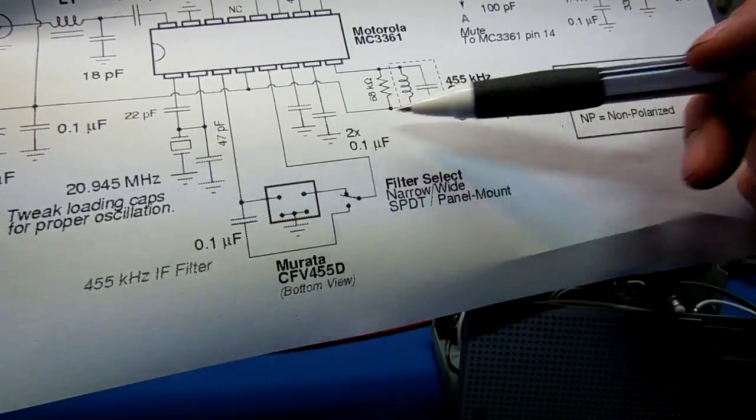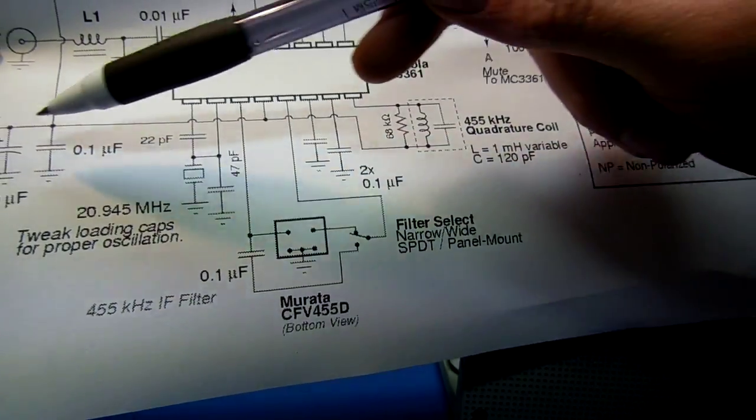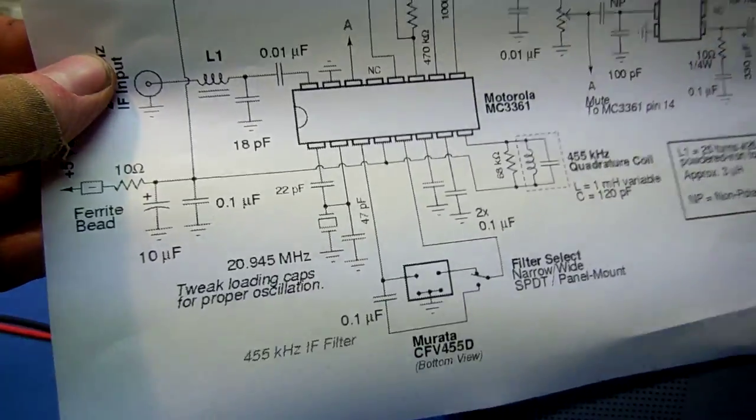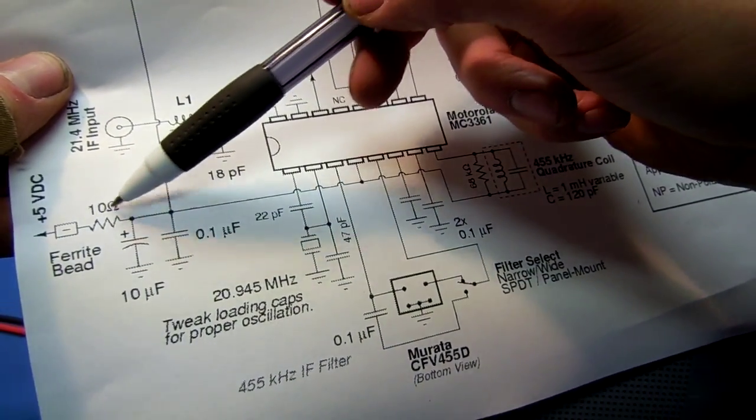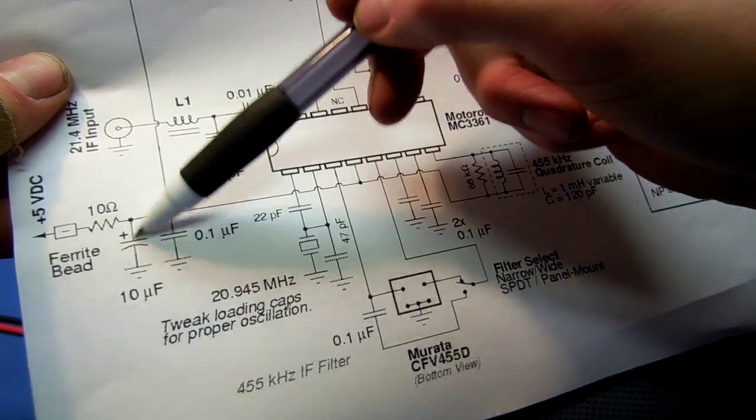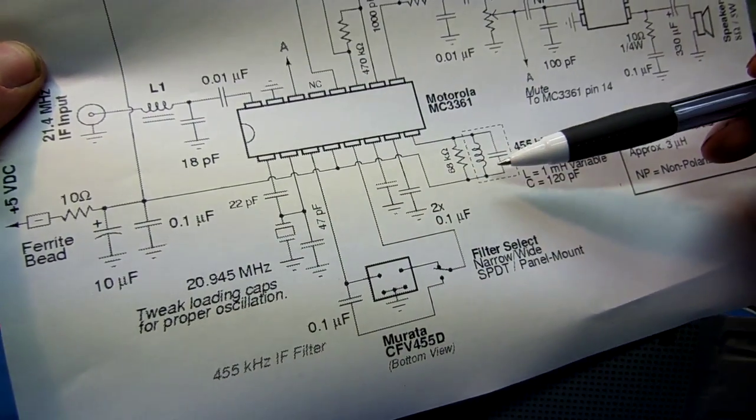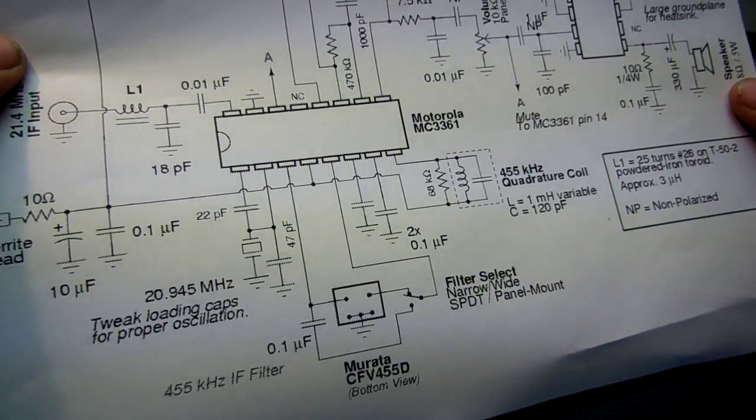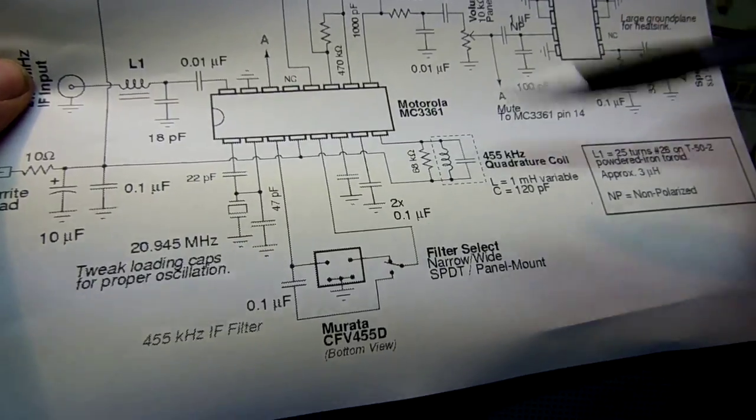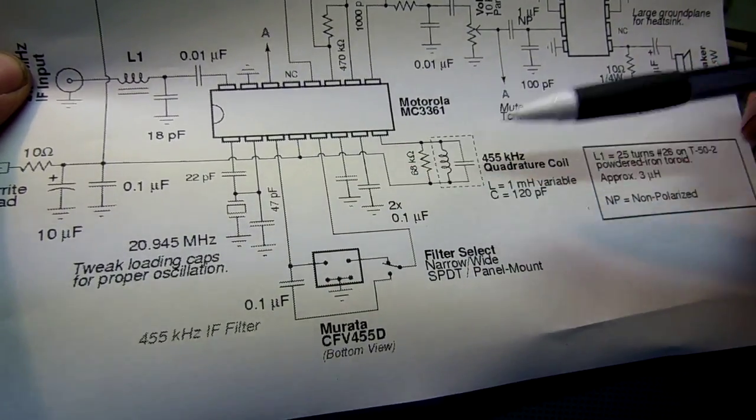The quadrature coil does have to tie back to the 5 volt rail, you'll see that. I put a series 10 ohm resistor just to DQ it and act as a low-pass filter. The power gets fed through the inductor into the quadrature circuit, so remember to do not tie this to ground, that has to be tied to the 5 volts.